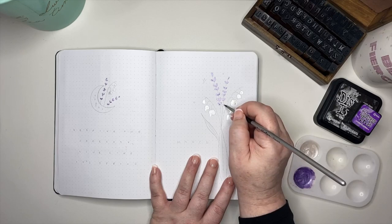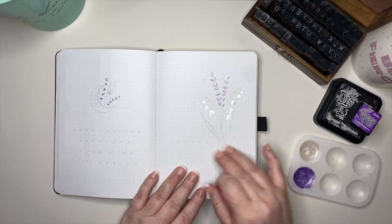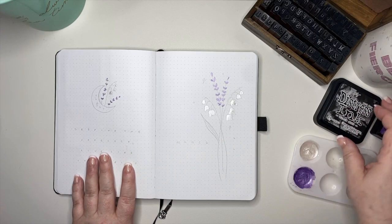While we give these paints that drying time, we're going to move on to the next element. First off, we're going to do the stamping. I'm going to stamp in the March header as well as the quote, and use these Distress Ink stamp pads with my letter stamps.